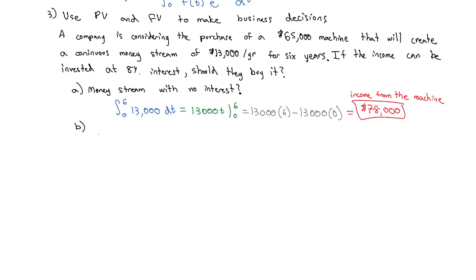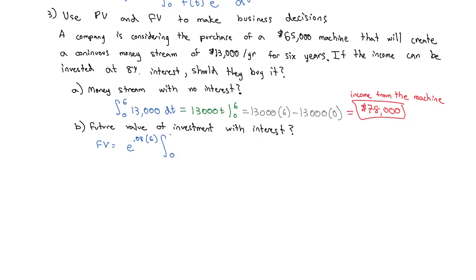But that money stream doesn't just sit there — it's also going to earn interest, which means it's going to be worth more than $78,000. So let's find the future value of the investment with interest. We use our future value formula: e to the 0.08 times six, integrated from zero to six of $13,000 times e to the negative 0.08t, dt.